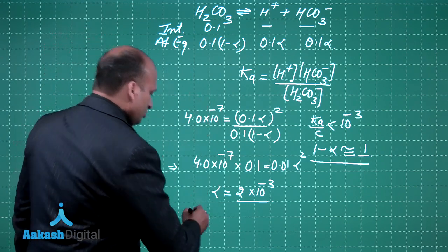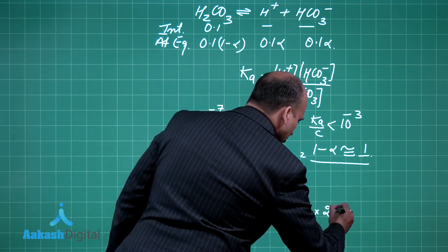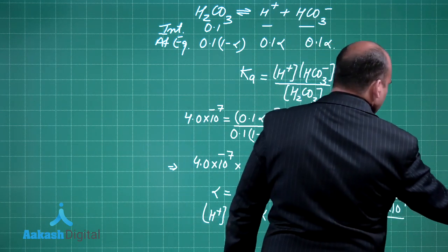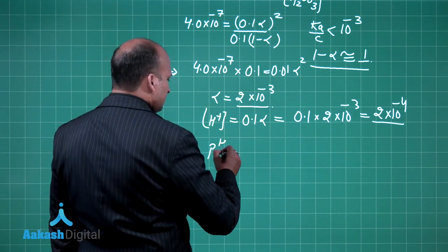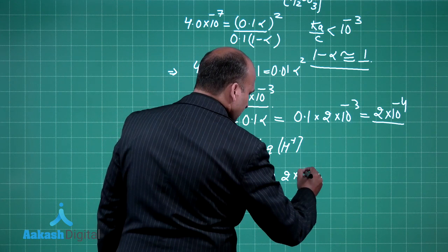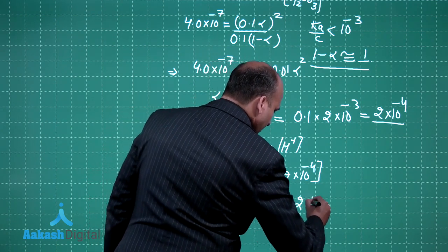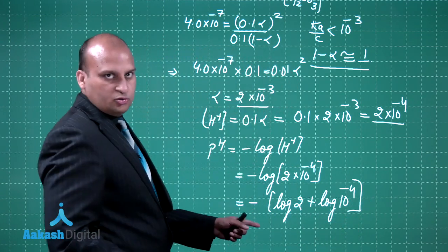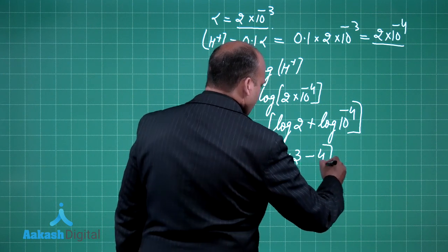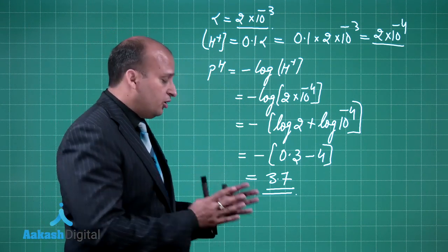But we have to find out the value of H+. What is the concentration of H+? 0.1α. So this will be equal to 0.1 multiplied by 2 times 10 to the power minus 3, which is 2 times 10 to the power minus 4. And now, with the help of this H+ concentration, we have to find out the pH. pH is negative log of H+ concentration. So this is negative log of 2 times 10 to the power minus 4, which is negative of log 2 plus log of 10 to the power minus 4. The value of log 2 was given in the equation and that is 0.3 and this is minus 4. So the answer is 3.7.